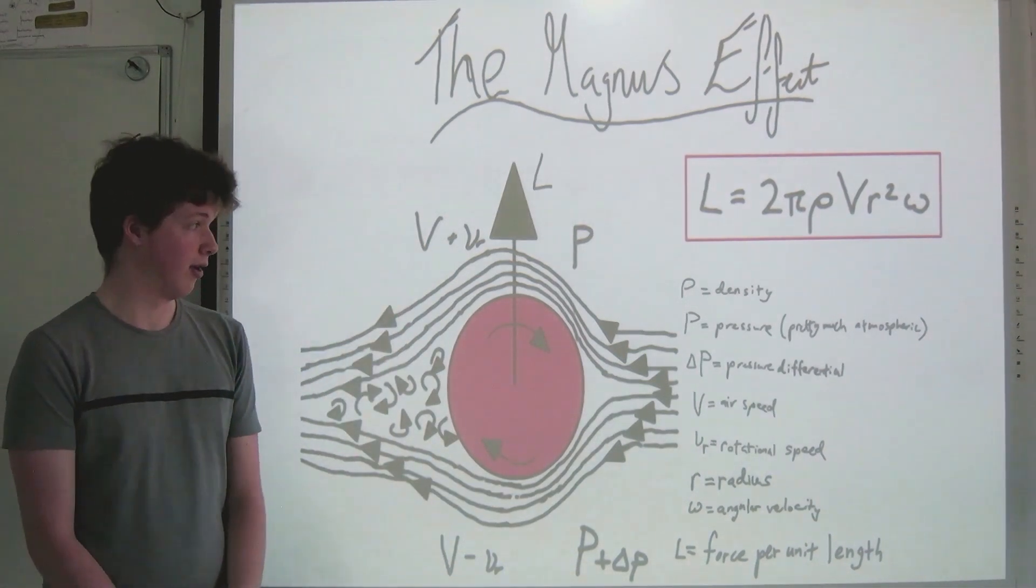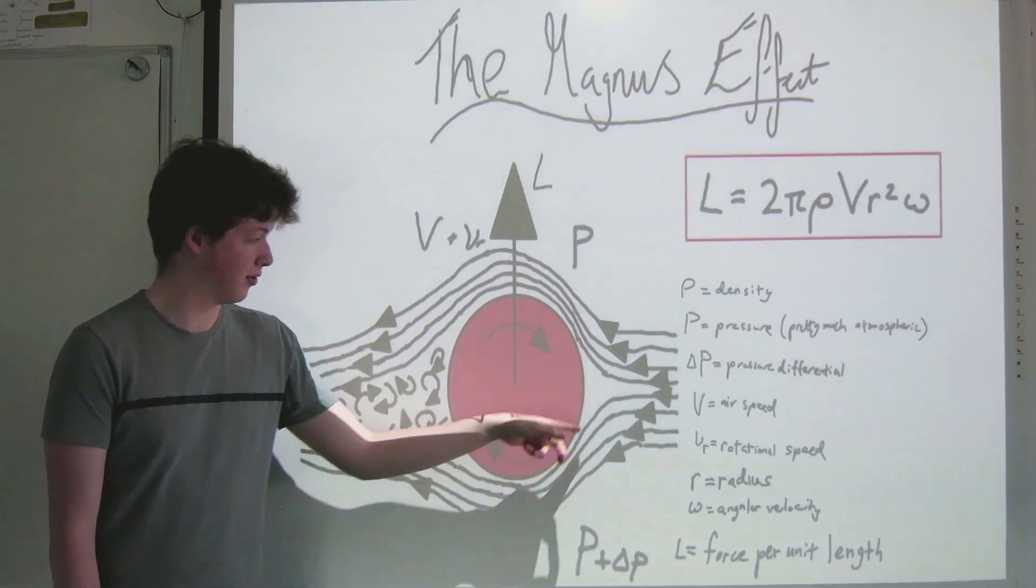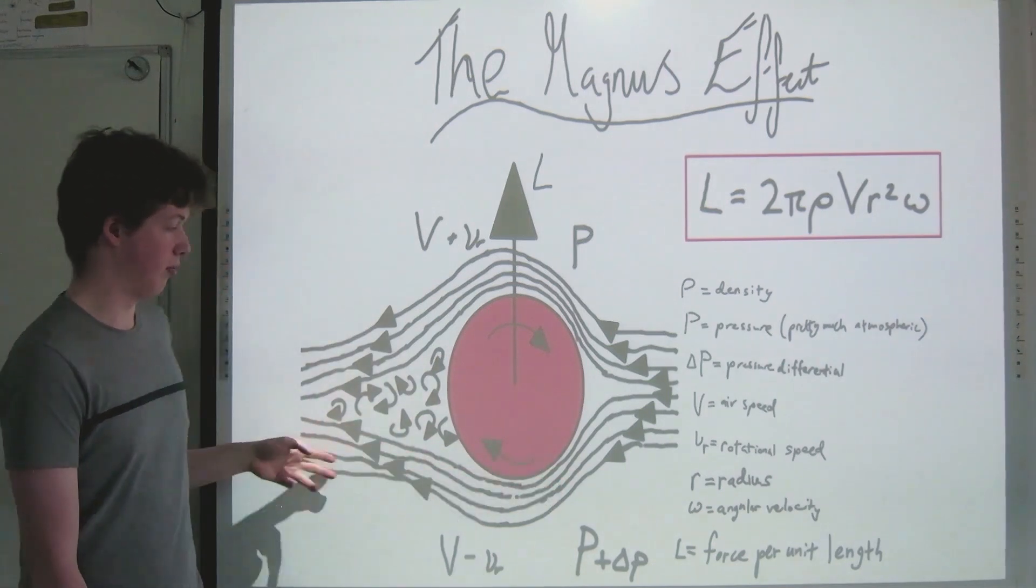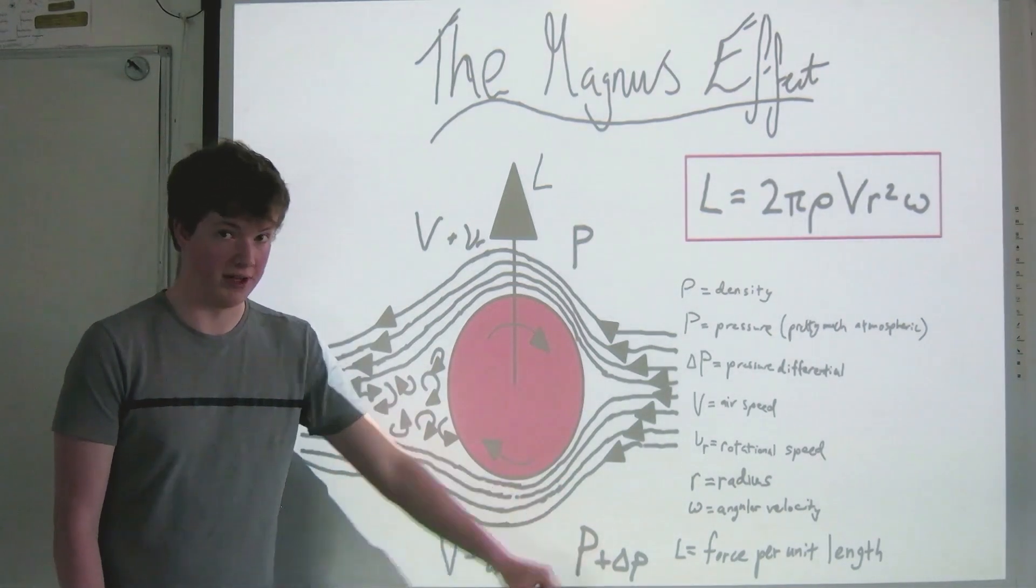As the ball flies, a turbulent boundary layer forms just around its surface. This interacts with the laminar flow further away from the ball to create a pressure differential shown by delta p.